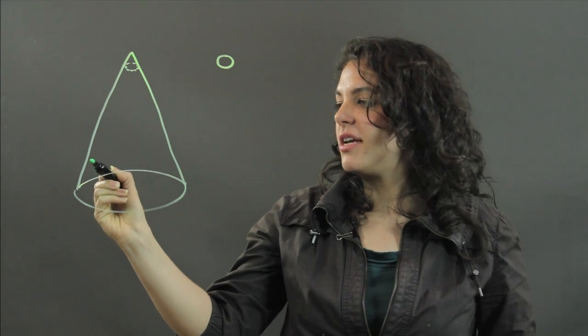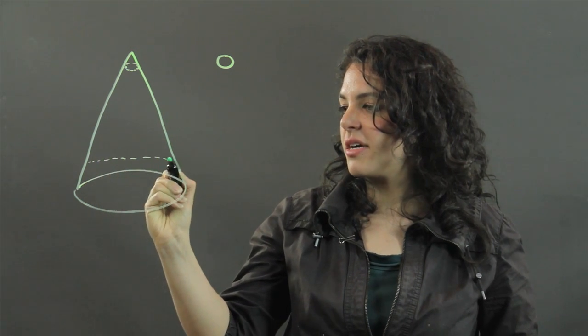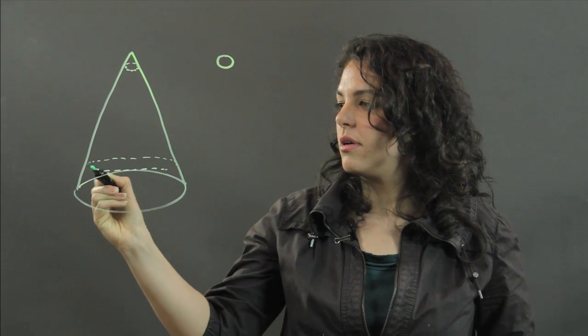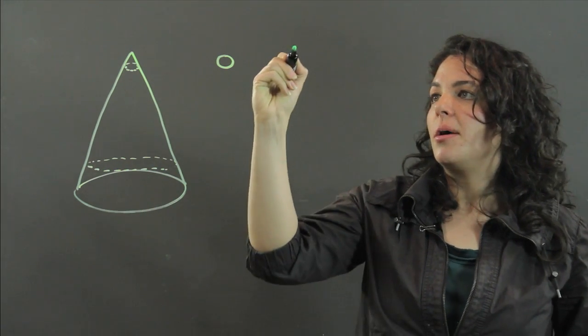If I take a cross-section closer to the base of my cone, I'm going to get a big circle.